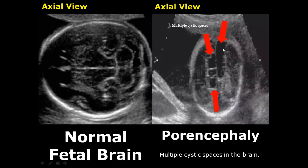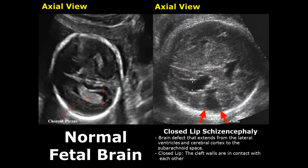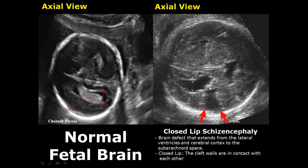Porencephaly is defined as multiple cystic spaces inside the brain — here we can see four separate cystic spaces. Schizencephaly presents as clefts inside the brain, mainly of two types: open lip and closed lip. These clefts extend from the lateral ventricles all the way to the subarachnoid space, reaching the skull bones. In closed-lip schizencephaly, the walls of the cleft are in contact with each other, meaning there is no open connection between the lateral ventricle and the subarachnoid space.